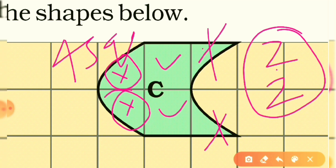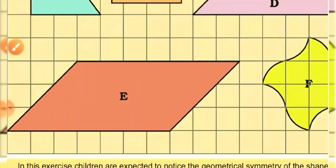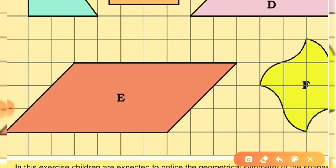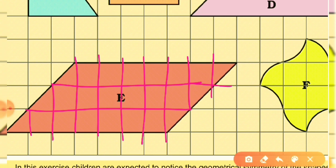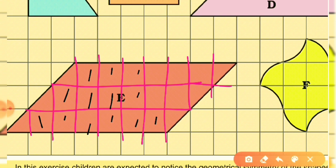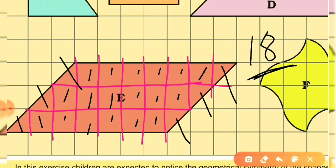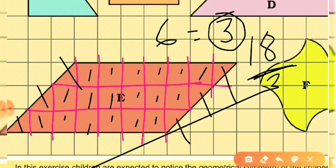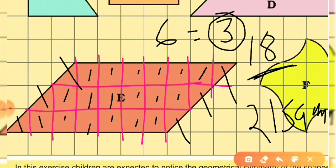For the next shape, there are no grid lines visible, so first draw the lines using a scale. Count the whole squares: 1 through 18 — you have 18 whole squares. Now count the halves: 1, 2, 3, 4, 5, 6 — six halves, which equals 3 whole squares. So 18 + 3 = 21 square centimeters is the area of this shape.